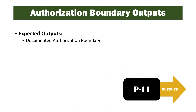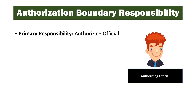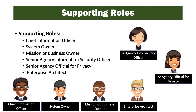Expected outputs from this task are a documented authorization boundary for the information system. The primary responsibility for this task is the authorizing official. The authorizing official is supported by the chief information officer, the system owner, the mission or business owner, and the senior agency information security officer and the senior agency official for privacy.